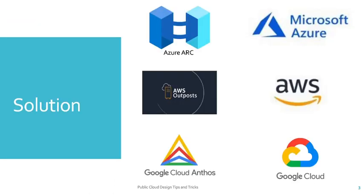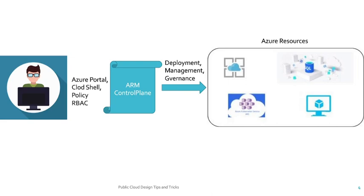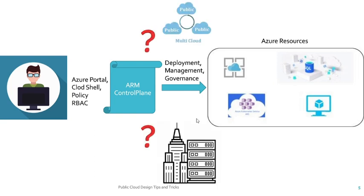To achieve this, Microsoft has provided Azure Arc, AWS has provided AWS Outpost, and Google Cloud has provided Google Cloud Anthos. As you can see in this diagram, cloud resources in Azure are managed and governed through Azure Resource Manager (ARM). ARM is a service layer for Azure that acts as a control plane, providing developers and operational personnel with deployment, management, and governance capabilities through the Azure portal, Azure CLI, or Azure Policy along with role-based access control.